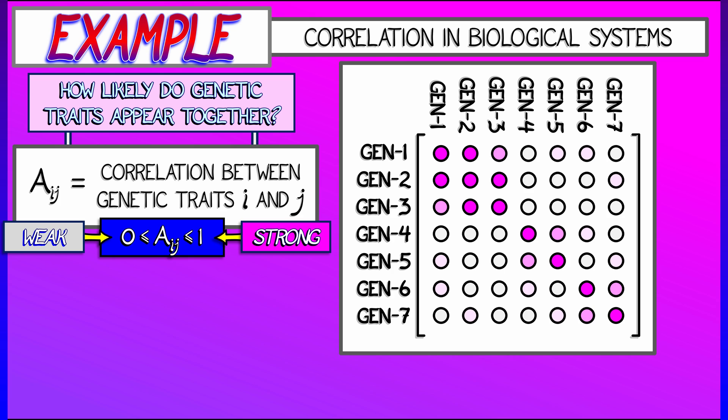This entry is zero if they're weakly correlated and one if they're strongly correlated. So for example, along the diagonals, you always get ones.